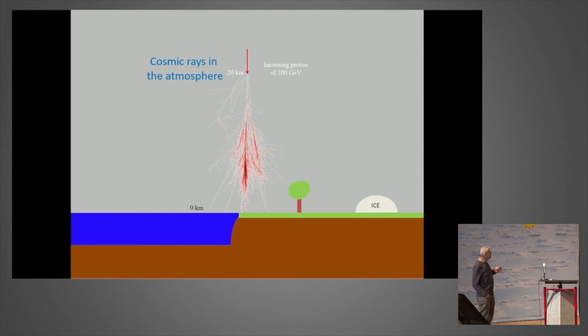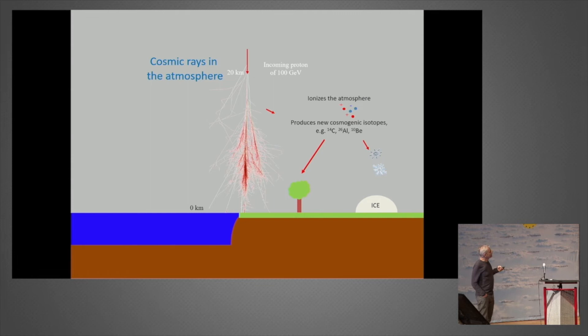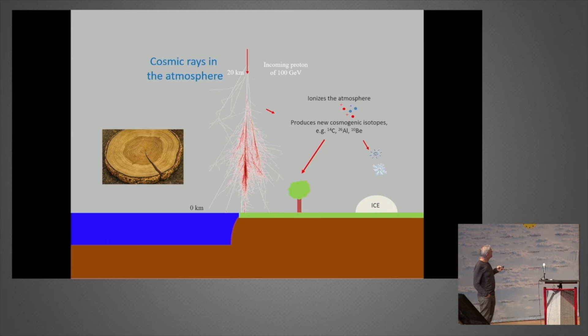When these particles enter into the atmosphere, they actually produce ions. Because the energies are so high you produce new isotopes—one of which is carbon-14. Carbon-14 goes together with the oxygen molecule and becomes CO2, but it's a slightly heavier form of CO2. It goes into a tree and might end up in tree rings, and if you measure the carbon-12 relative to carbon-14, you can say something about how active the sun was back in time.